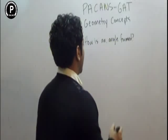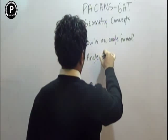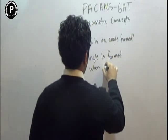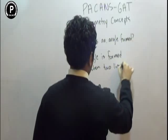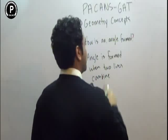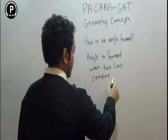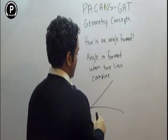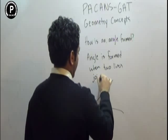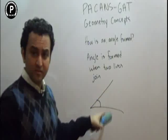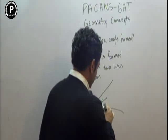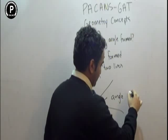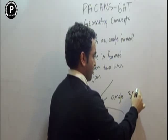How is an angle formed? An angle is formed when two lines combine — combine, intersect, any word you can use. When two lines join, an angle is formed. These are two lines and this thing is going to be called the angle. If this is an angle of 35, there is a small circle — 35 degrees.